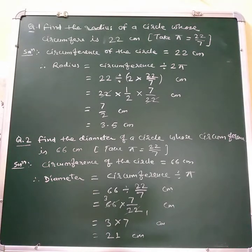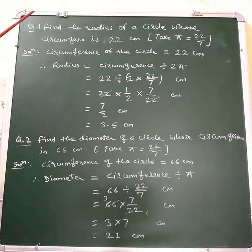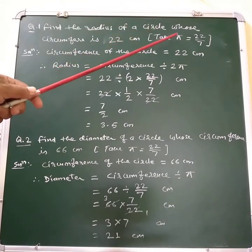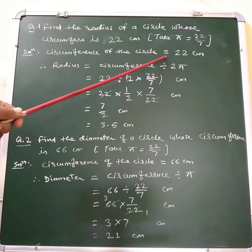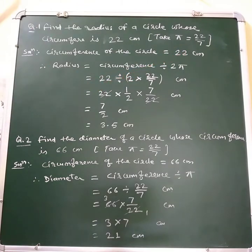Hello everyone, today we will learn how to find the radius of a circle whose circumference is given. The question is: find the radius of a circle whose circumference is 22 centimeters. Here we have to take pi equal to 22/7. The circumference of the circle is given as 22 centimeters.